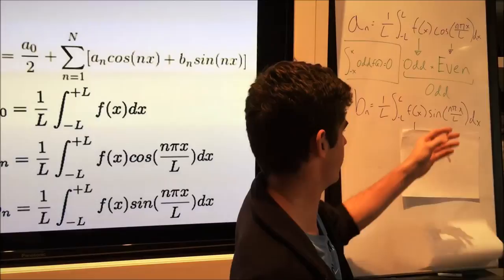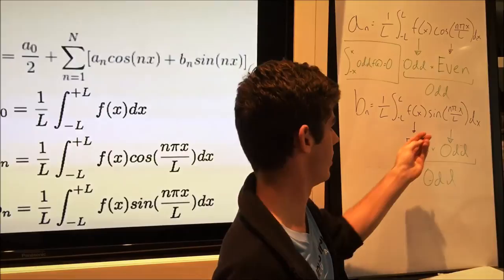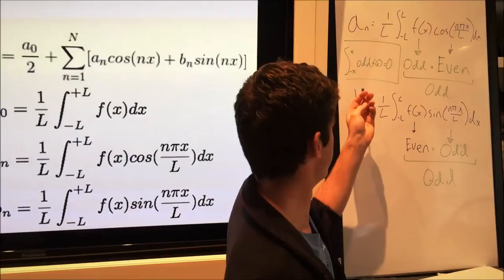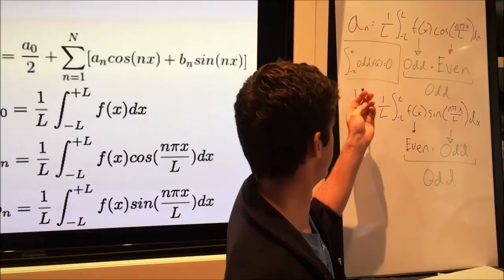If we look at b_n, if f at x is an even function, and sine is always odd, we will get an odd function once again. Like we said before, the integral of an odd function from the same bounds is zero. Therefore, we can disregard b_n.